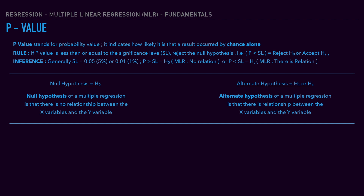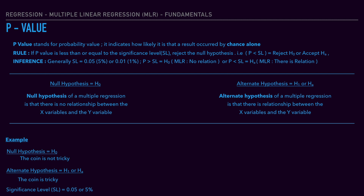Let's take a tricky coin example. We call the audience and say this is a non-tricky coin. Let's consider the null hypothesis as: it is not a tricky coin. Since we are a magician, the alternative hypothesis is: it is a tricky coin. The significance level is 5%, that is 0.05. Let's start tossing the coin.